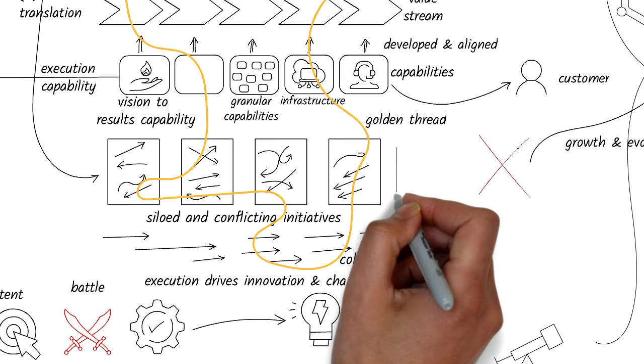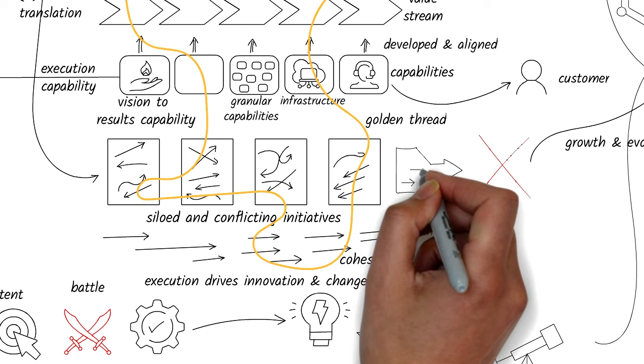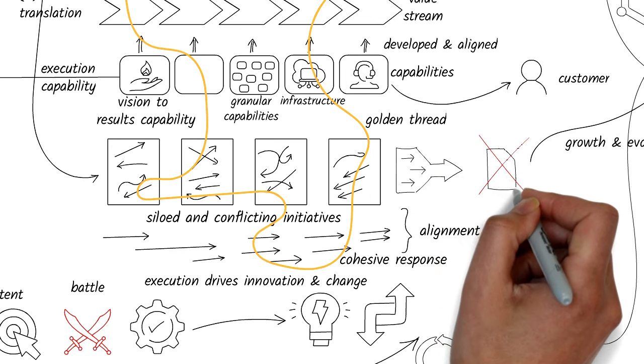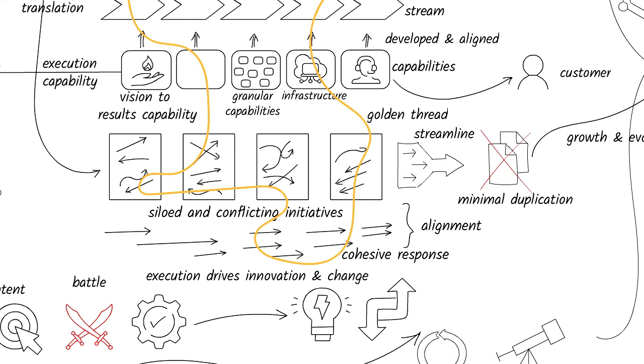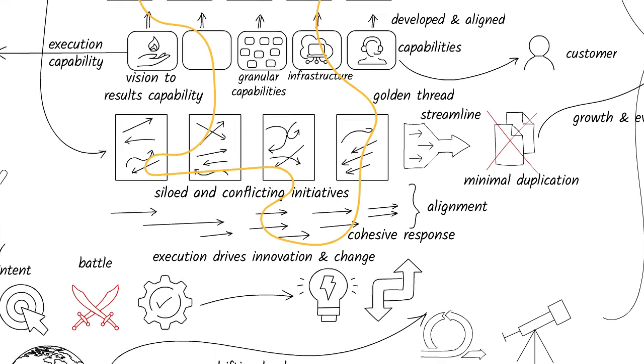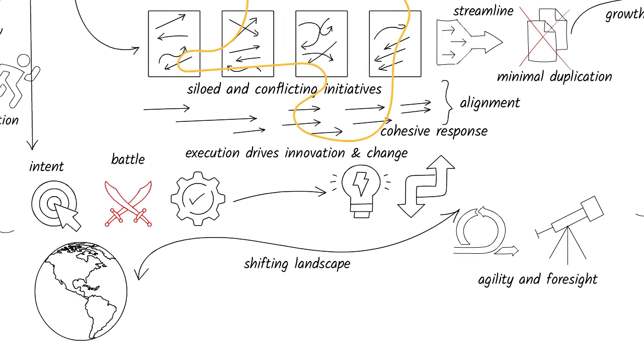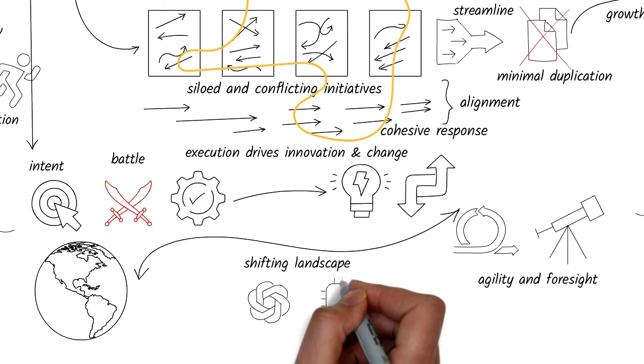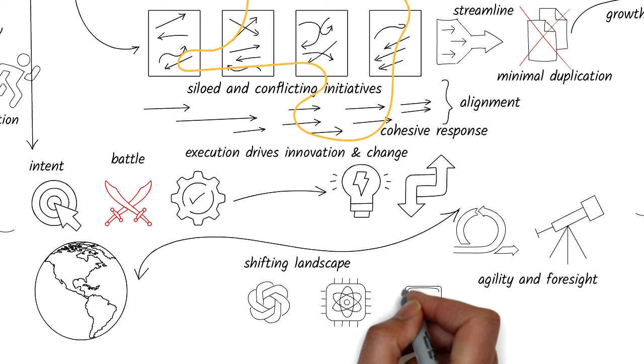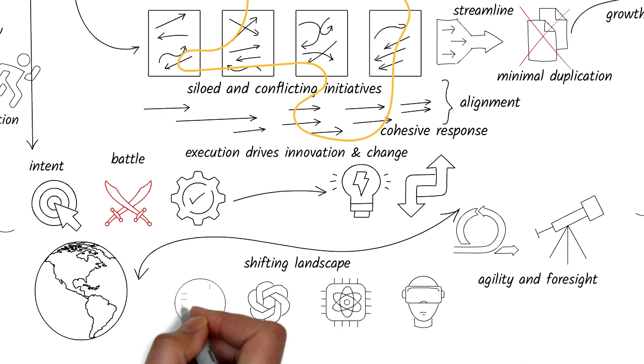Embracing this approach streamlines strategy execution, and it heads off many of the downstream challenges from ever occurring in the first place, such as creating duplicate solutions or inefficiencies. In addition, this is so important now, because the pace of change due to technologies like AI and other global disruptions require organizations to be very adept at change.